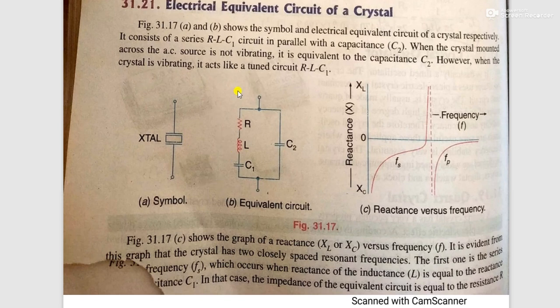The equivalent circuit for the crystal is as shown. One crystal is equivalent to RLC with C2 in parallel. The reactance versus frequency response will be like this. These are the equivalent circuits where R, L, C1 are connected in series while C2 is connected in parallel.